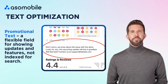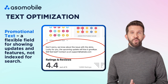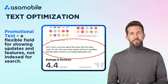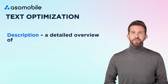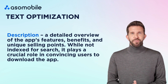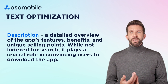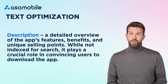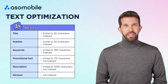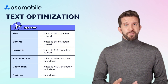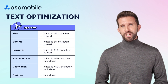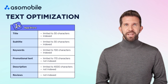Promotional text — this field allows you to highlight special features or updates. You can change it anytime without needing an app update, but it is not indexed for search rankings. Description — use this space to explain your app's features and benefits. While the description is not indexed for search, it helps convince users to download your app. We'll concentrate on optimizing the title, subtitle, and keywords fields in the App Store, strategically using relevant search terms to enhance visibility, improve rankings, and increase organic downloads.